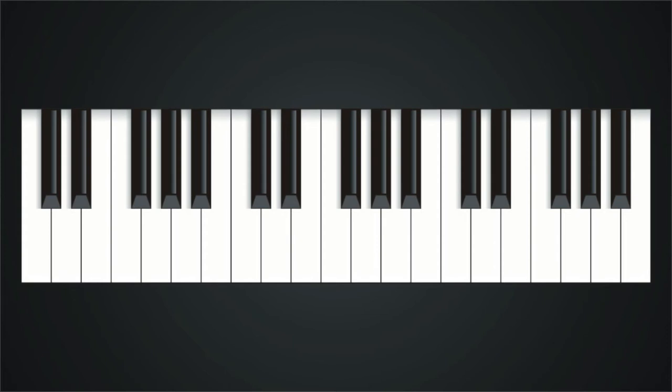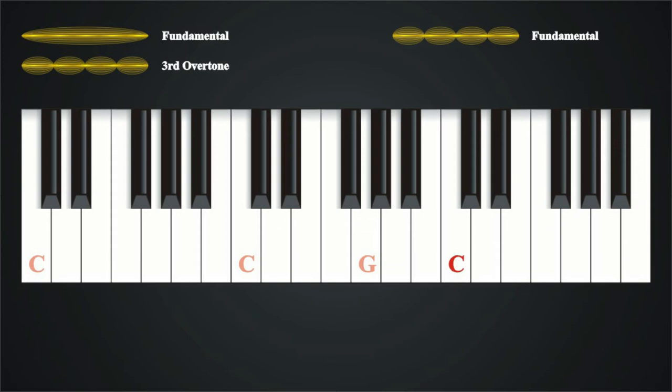Lastly, for the purposes of this discussion, the third overtone for low C, which is the fundamental string length divided into quarters, vibrating at four times its frequency, shares its frequency with the fundamental C located immediately above our second overtone of G.